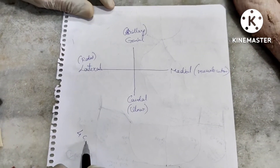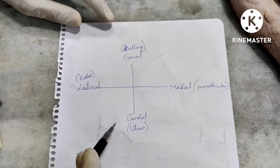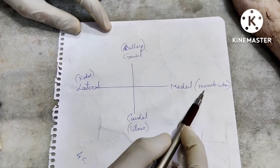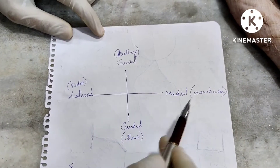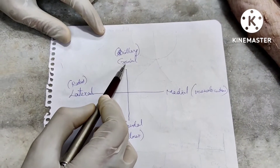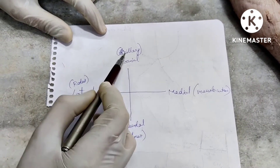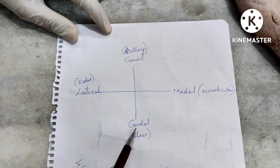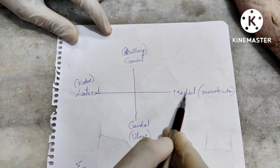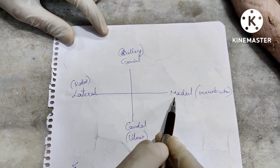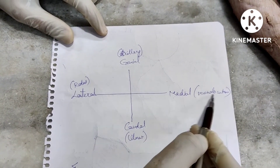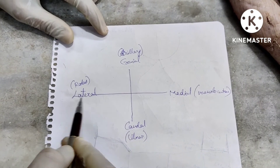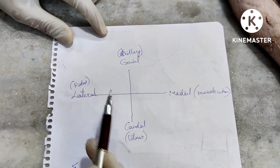There are four cutaneous antebrachial nerves arising from the different nerves of the brachial plexus. The cranial cutaneous antebrachial is from the axillary nerve. The caudal cutaneous antebrachial is from the ulnar nerve. The medial cutaneous antebrachial nerve is from the musculocutaneous nerve, and the lateral cutaneous antebrachial nerve is from the radial nerve.